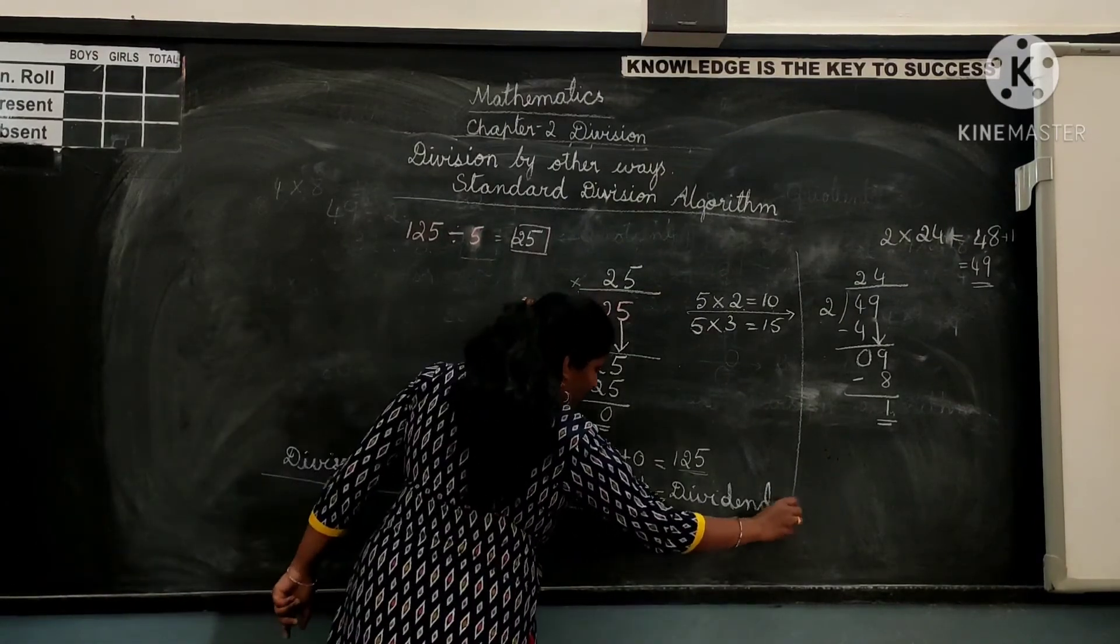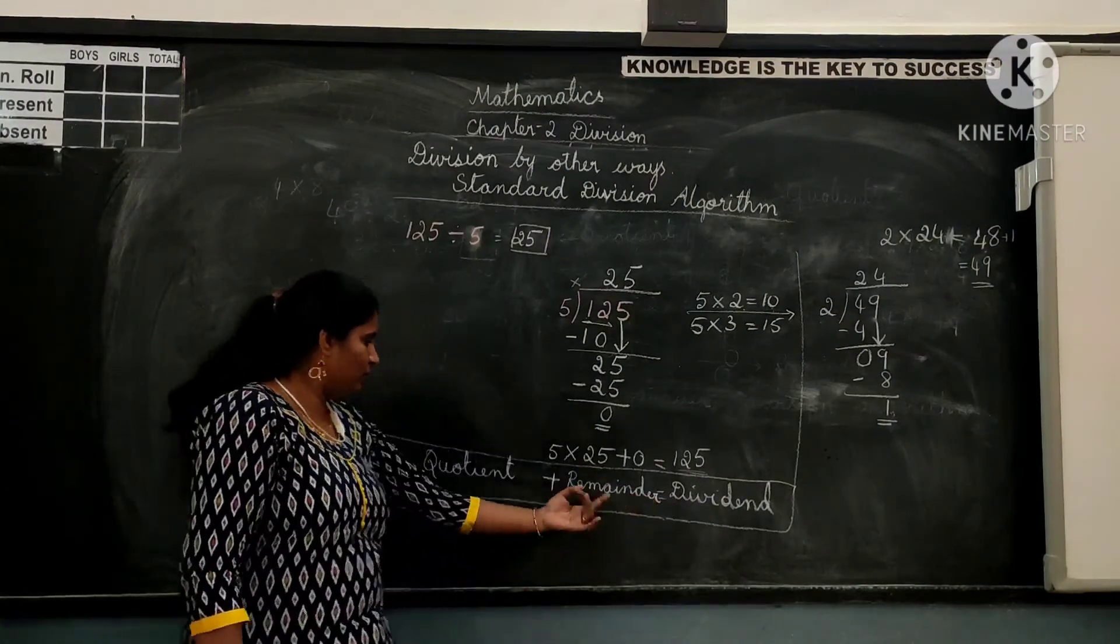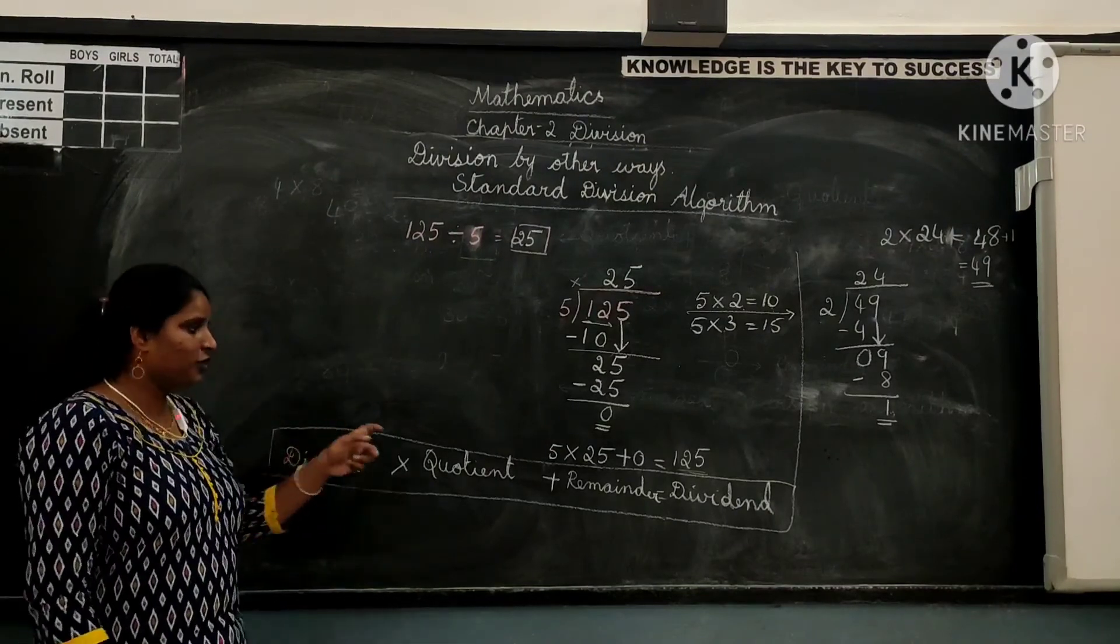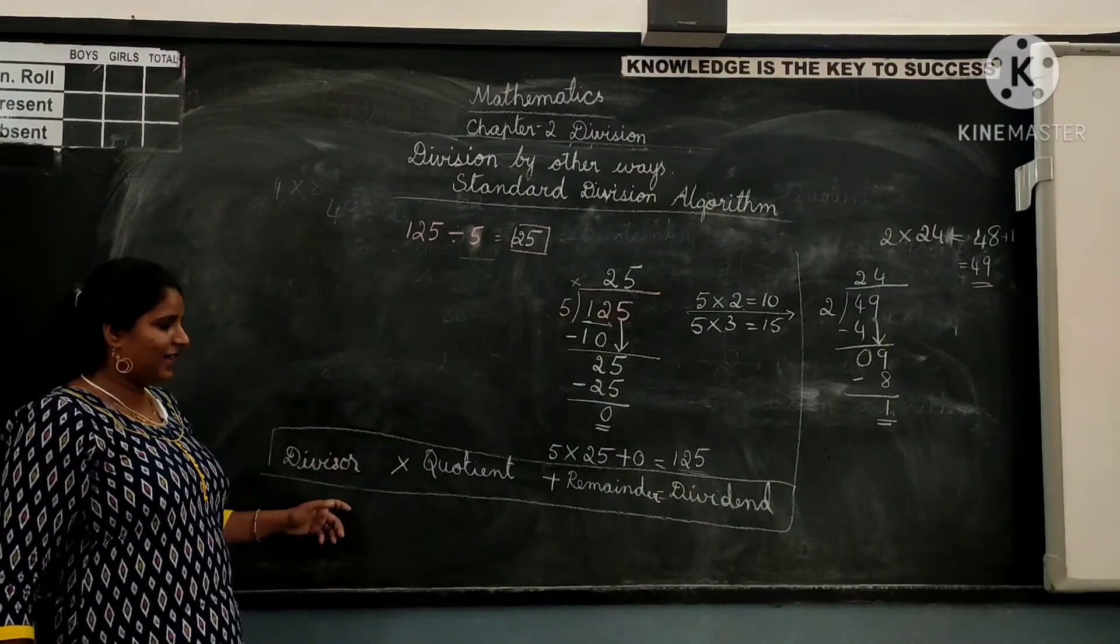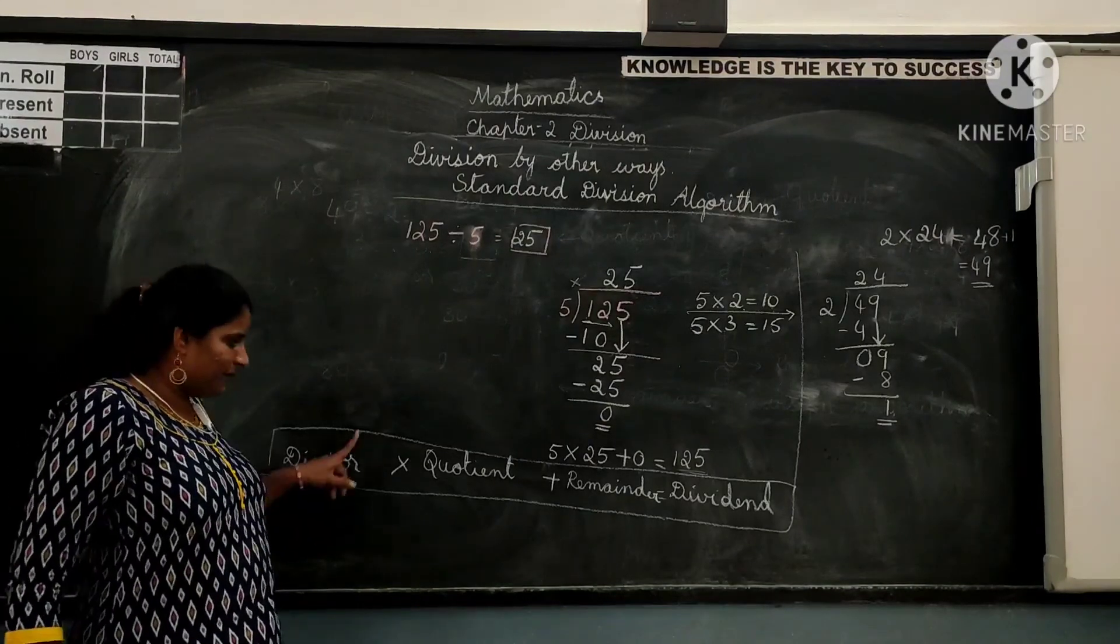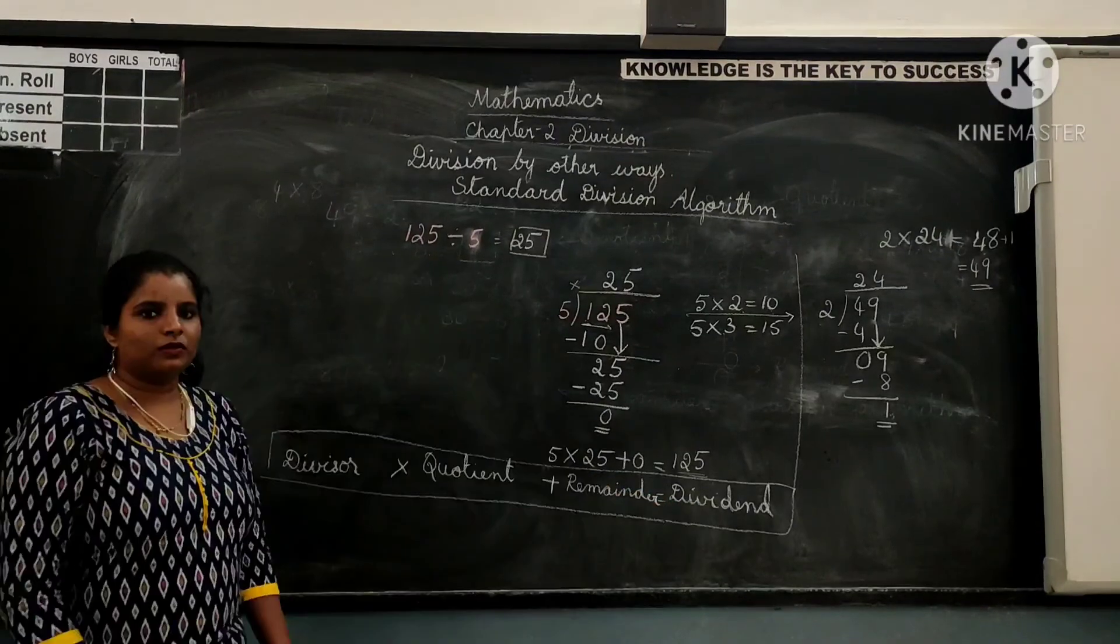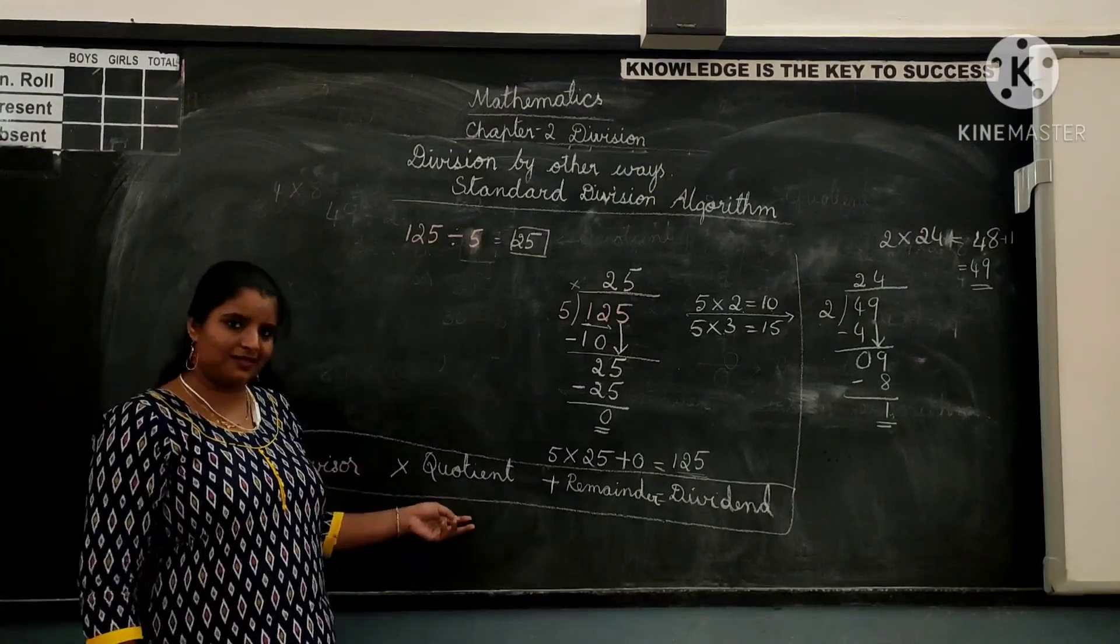So to verify the answer, you have a formula here. That is, if the dividend is equal to the product and sum of this, then your division method is correct. That is, divisor into quotient plus remainder should give you the dividend. Then this is how you cross-check your division method. So substitute the value of the divisor, multiply by the quotient, you add it with the remainder, then you will get the dividend. So this is called standard division formula and you can verify the division of two numbers using this formula.